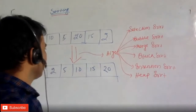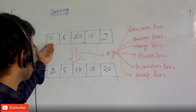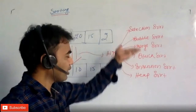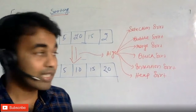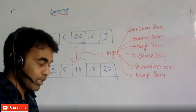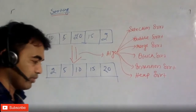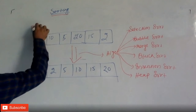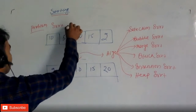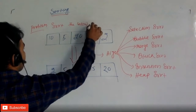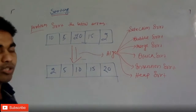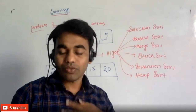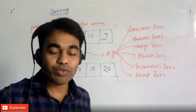Now the question is: if the problem is pretty straightforward — given any numbers, you need to arrange them in sorted form — why do I need to study this many sorting algorithms? The problem is simply: sort the below array. So why do we need to write different kinds of algorithms?